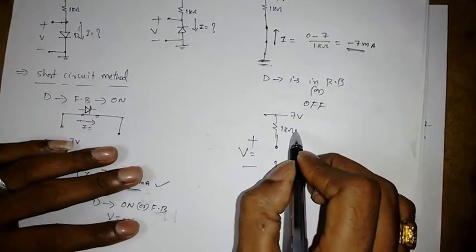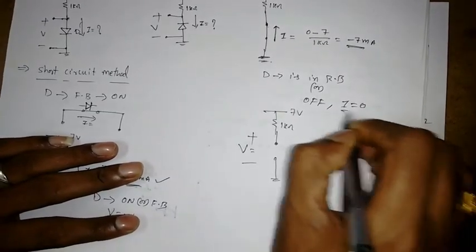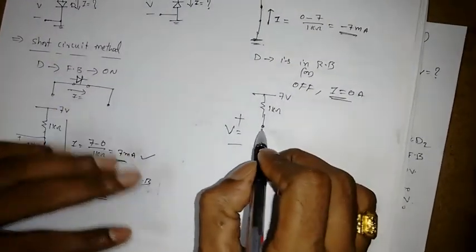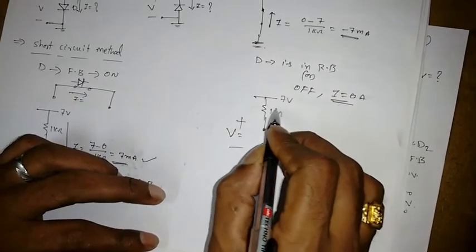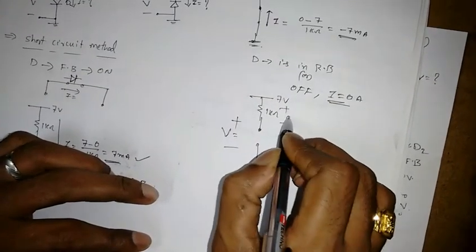So if I find V here. Now what is this current. Whenever the current I is 0 only. So 0 ampere. Whenever there is no current flow. The drop across this resistor will be 0 volt.